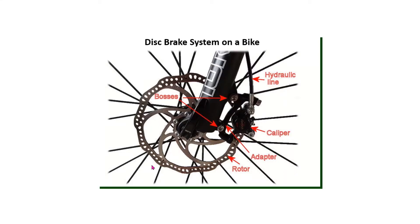Welcome to another tutorial in ANSYS Workbench. In this tutorial, we're going to look at the stresses and deflections that develop in the disc brake system of a bicycle. We can see the spokes in a bike wheel. The disc, called the rotor, rotates with the wheel. When the brakes are applied, fluid flows through the hydraulic line to the caliper. The caliper squeezes on the rotor, slowing down the spinning wheel.